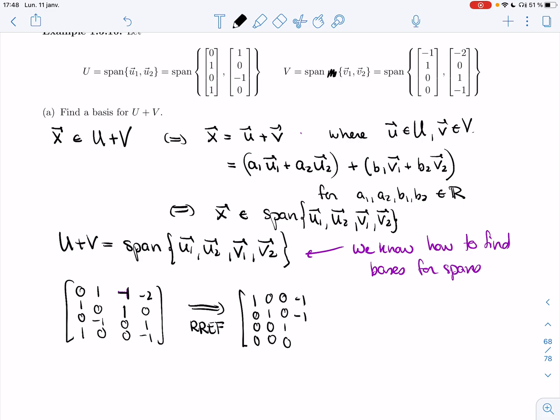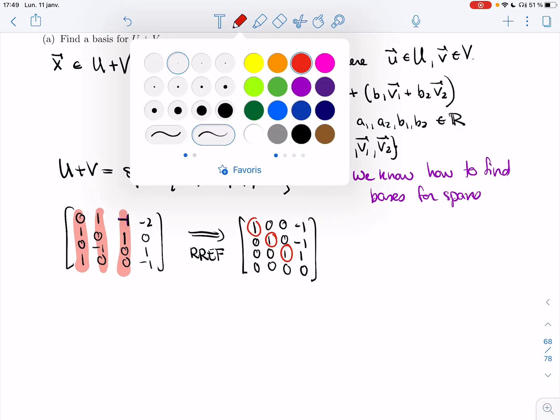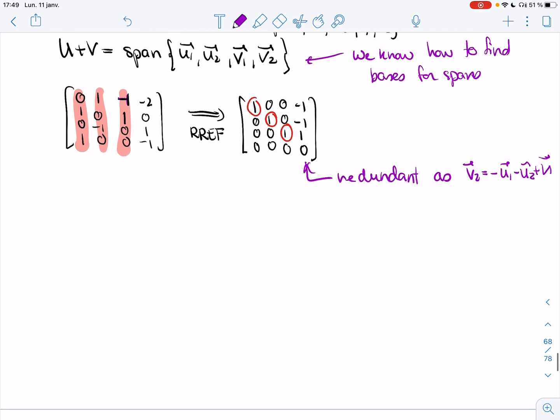I got minus one, minus one, one, zero. And so we have three leading ones, which means we keep these three and the final one is redundant. So this one is redundant, and we have a recipe for it. V2 equals minus U1, minus U2, plus V1, according to the recipe.